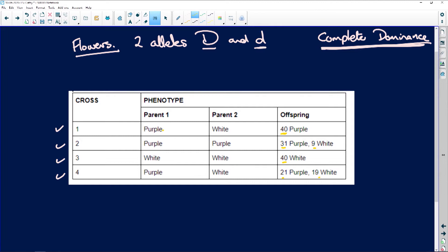Parent one is purple, white, purple, purple, white, white, purple, white. And then it shows you here what each of the offspring ended up being. Now, first thing you do, look here. Mendel's law of dominance.